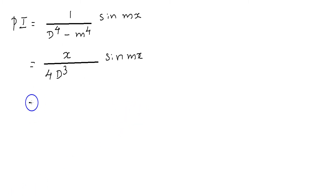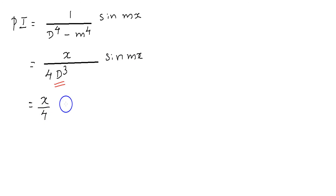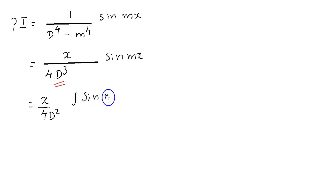Here we have d cubed in the denominator, which means we have to integrate sin mx three times. Then the particular integral is equal to x by 4 into, after the first integration, 1 by d cubed becomes 1 by d squared into the integral of sin mx dx.